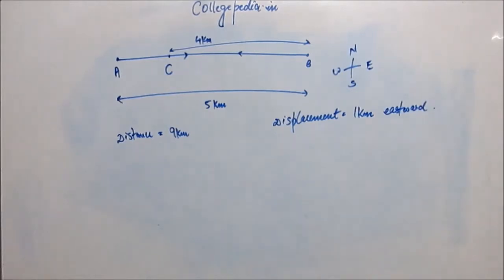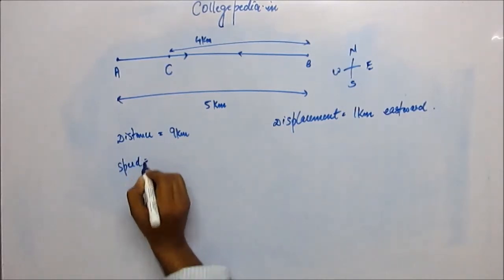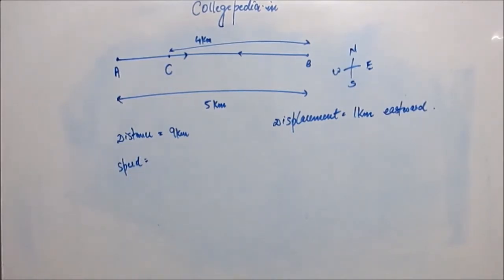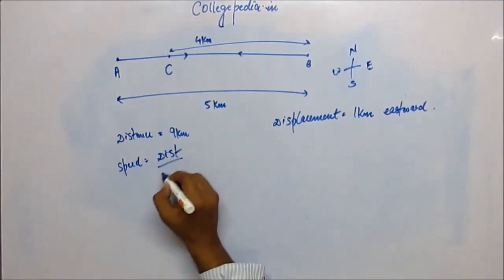Now let's move one step ahead and see what is speed. Speed is the measure of how fast a body is moving. Speed is defined as distance upon time.